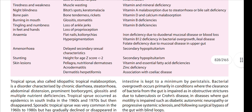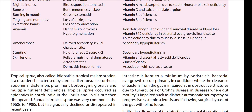Specifically, vitamin A deficiency causes night blindness; vitamin D deficiency leads to calcium malabsorption and bone diseases; vitamin B deficiency causes burning in the mouth and tingling or numbness in the feet or hands. Because the ileum absorbs vitamin B12, if it is not absorbed, the person will develop anemia — iron deficiency anemia. Additionally, pituitary dysfunction can cause amenorrhea, and zinc deficiency can cause skin lesions.